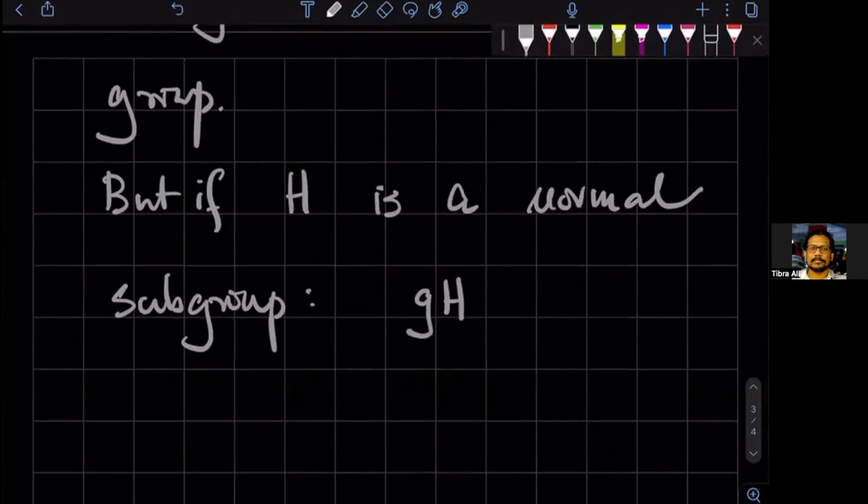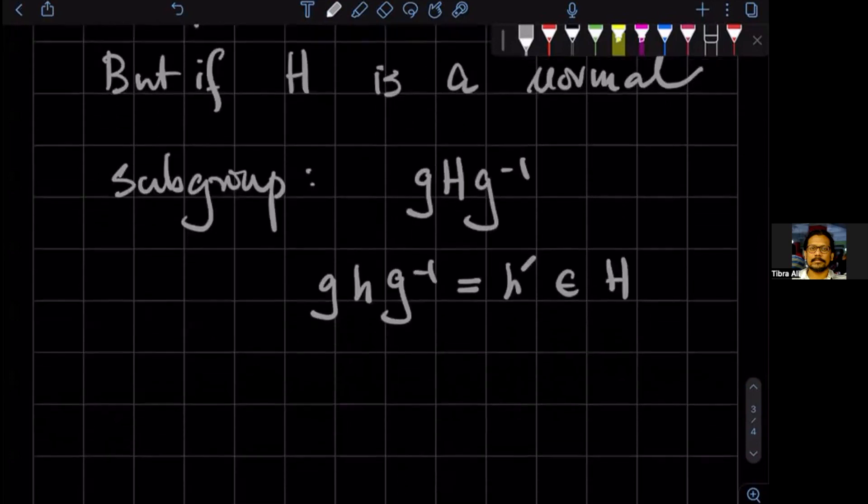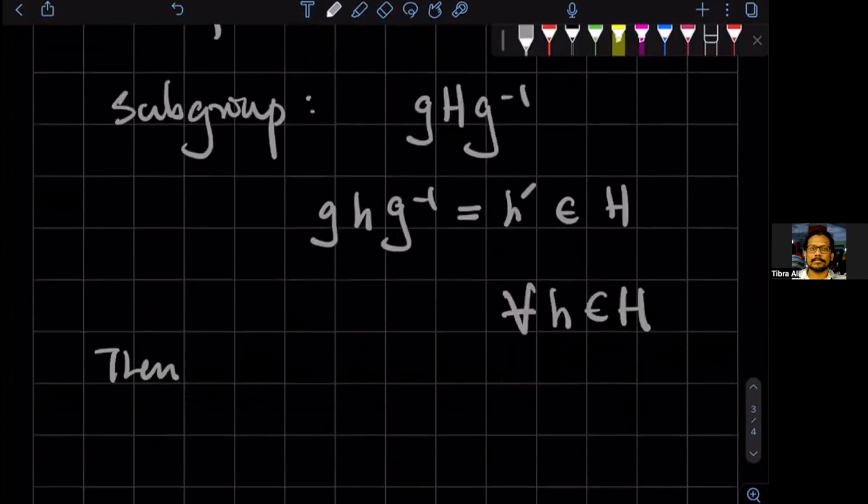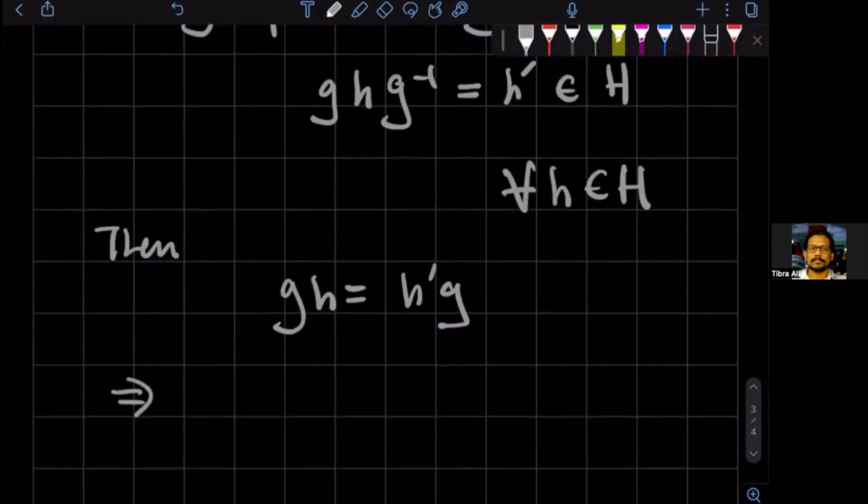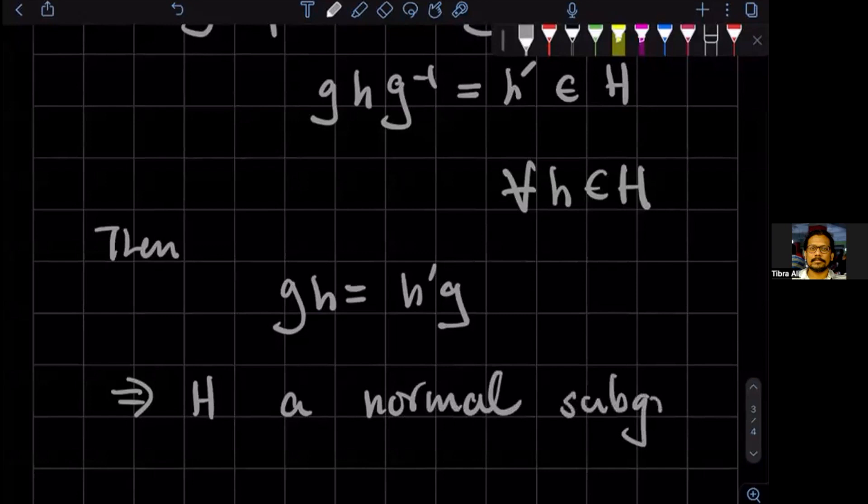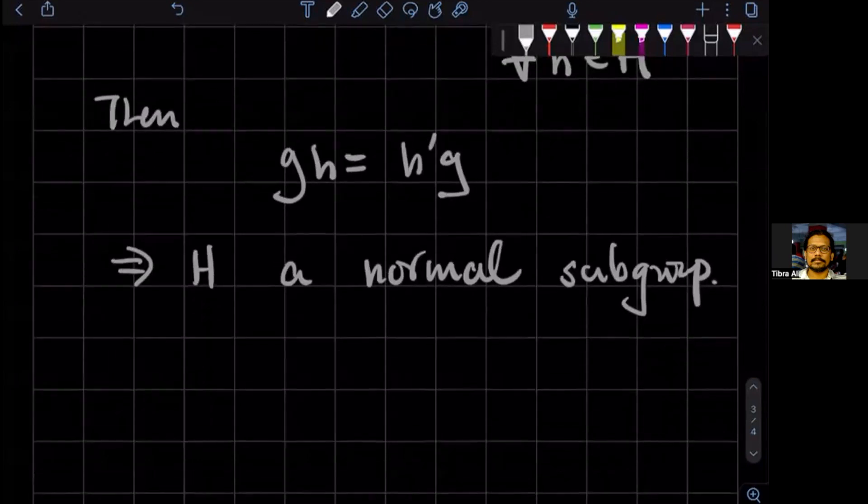It means that if you conjugate an element, if you do this action, meaning that if you take an element from H and take some g and g inverse, then if you get h prime which is also in big H, if this is true for all h in H, then we can say that g of h is equal to say h prime of g. Then we call H a normal subgroup. This need not be the case for all subgroups.